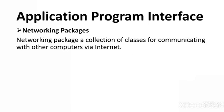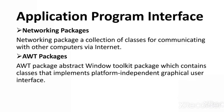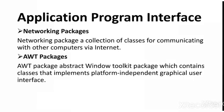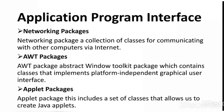Networking packages consist of a collection of classes for communicating with other computers via the internet; if you want your programs to interact with other programs on the internet, you can use networking packages. The AWT package, which stands for Abstract Window Toolkit, is a package with a set of classes that implement platform-independent graphical user interfaces; you can use AWT package methods to display circles, rectangles, straight lines, etc. The applet package includes a set of classes that allow us to create Java applets, which are executed on the client machine with the help of Java-enabled web browsers.